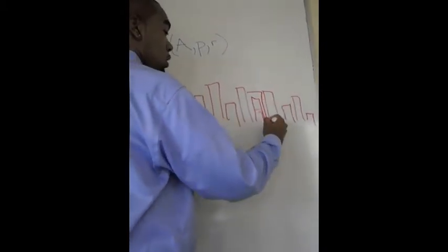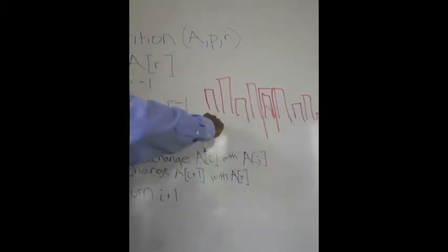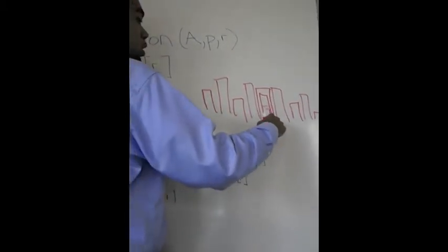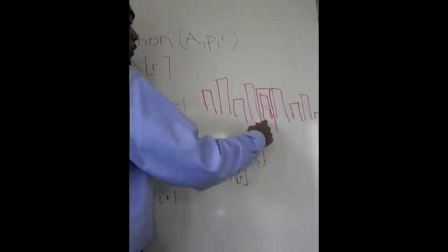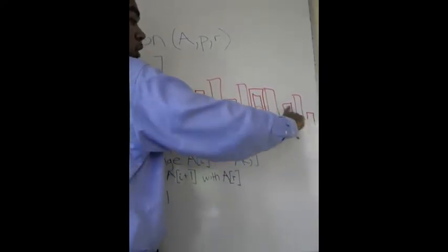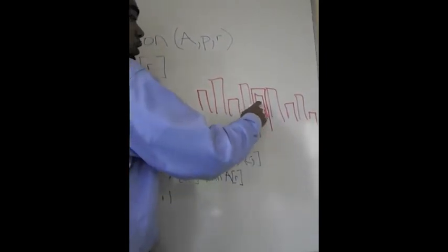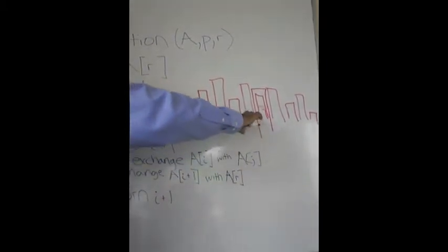The pivot point doesn't necessarily have to be in the middle, because it can randomly select any element to be the pivot point — but ideally you do want it to be near the middle. When you find this pivot point, it's going to compare the different values to see if they're greater than or less than the pivot. Elements shorter than the pivot move to the left side, and elements greater than the pivot move to the right side.